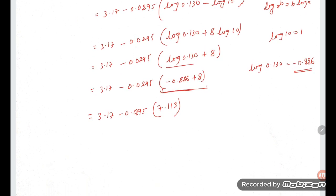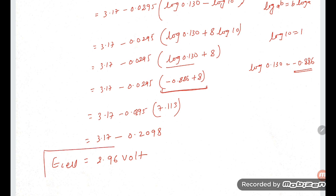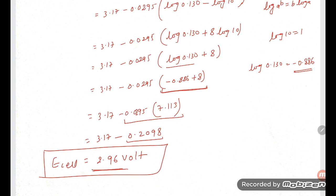So the final answer is E_cell = 2.96 volts. This is the easiest way to solve it. You need to know how to use the log table — specifically what the characteristic and mantissa are — to find the log values.